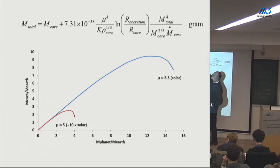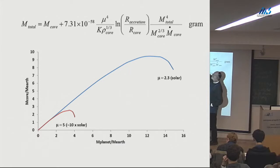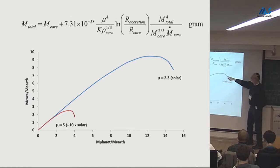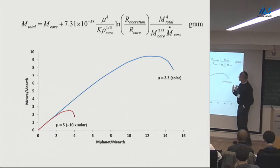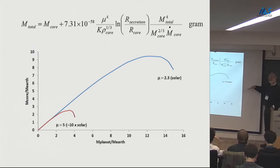There's another thing that can help speed things up: the mean molecular weight of the envelope. This is a solar envelope and this is one that's enhanced 10 times solar. So you don't need much. And then the question is what happens with all these planetesimals coming in and depositing material in the envelope.